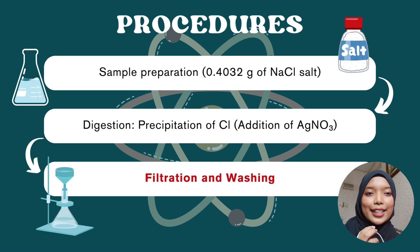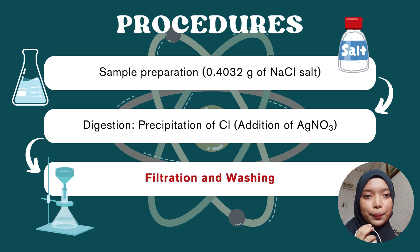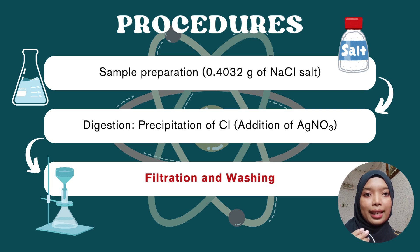After that, the AgCl precipitate is filtered using filter paper and rinsed with HNO3, nitric acid, several times until the filtrate is free from silver ions. To determine if the precipitate is free from silver ions, a small amount of the excess solution is tested. If there is no turbidity observed, then the precipitate is silver ion free.